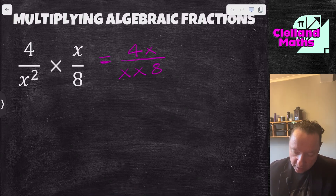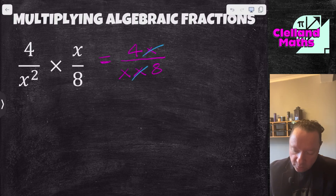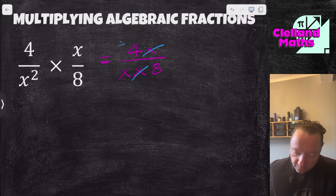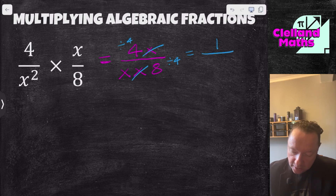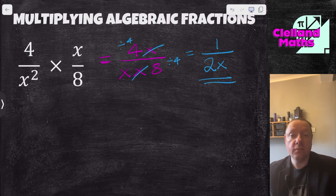To simplify, if I've got a pair that's the same I can just cancel them. So the x's are gone. Then for the number parts, 4 and 8: divide the top by 4 and the bottom by 4. So 4 divided by 4 is 1 — there's no x anymore — and 8 divided by 4 is 2, but I've still got an x. So 1 over 2x is our final answer.